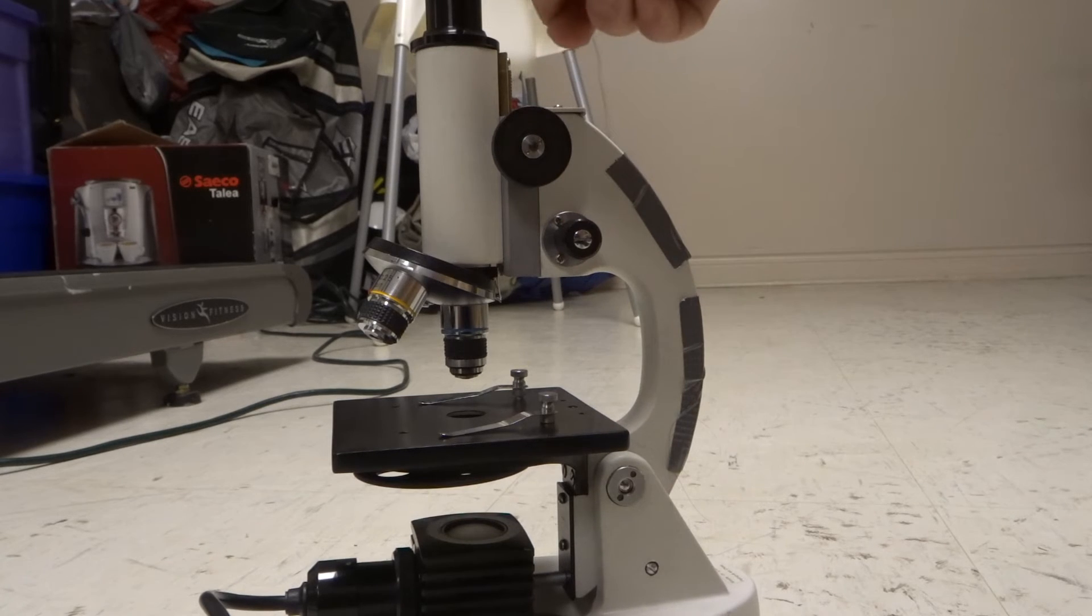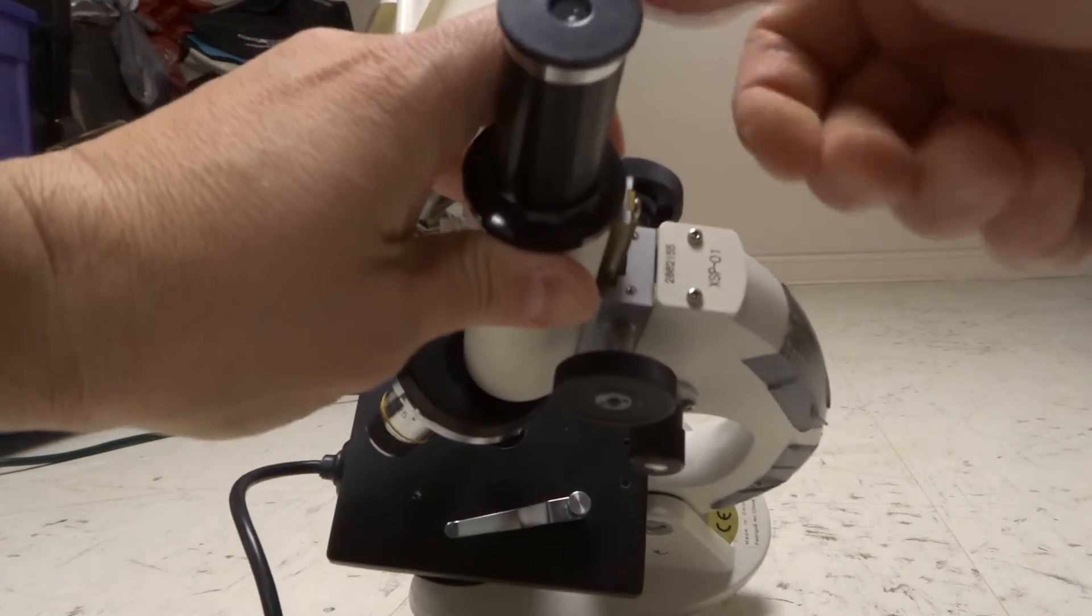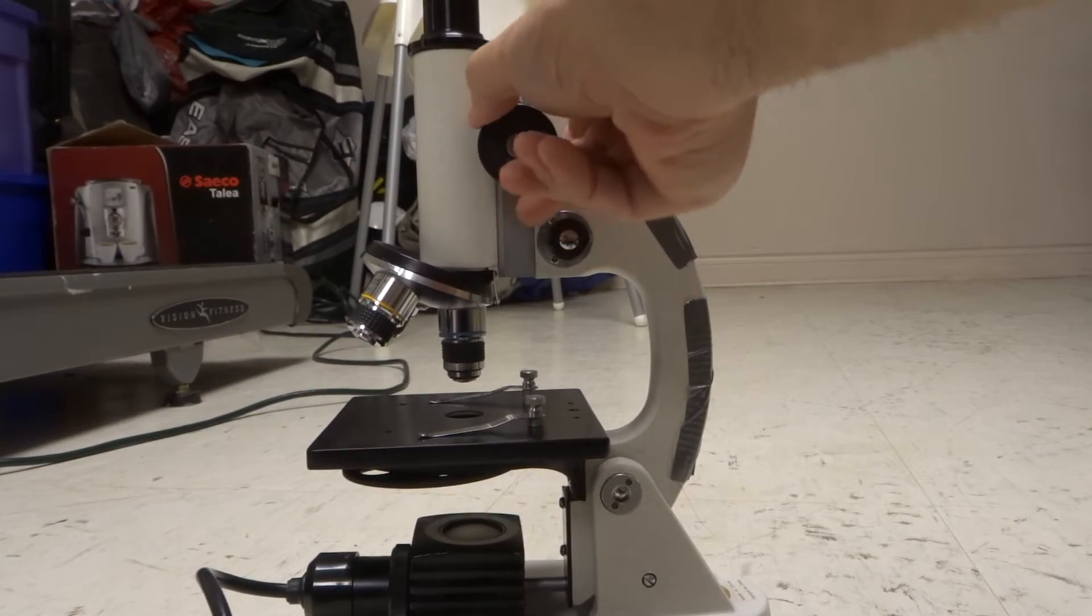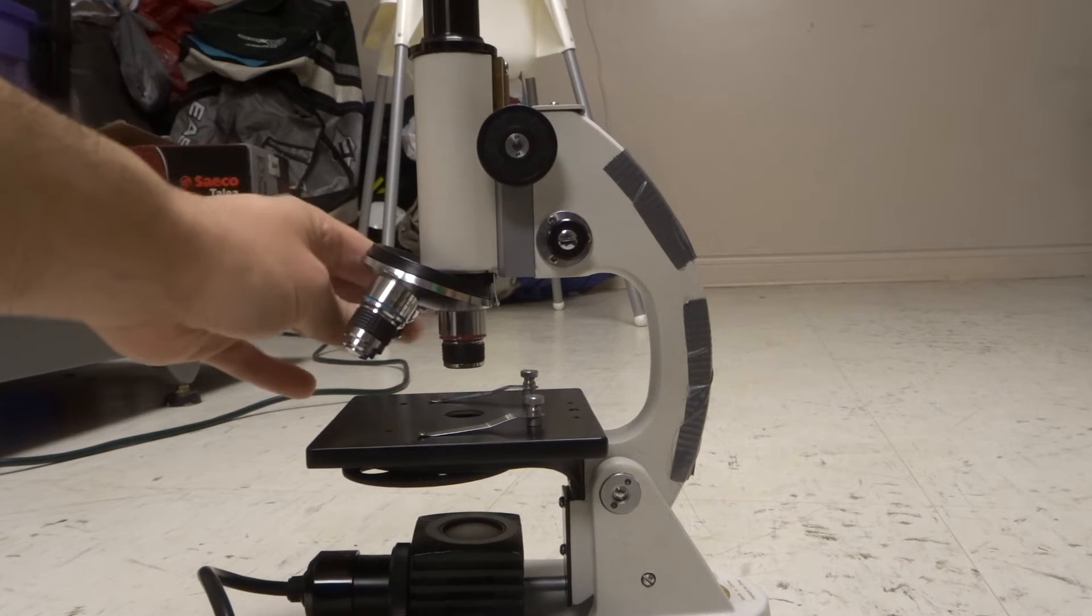So what you want to do is first and foremost, look through the optical lens, the ocular lens up here. And you want to adjust the coarse adjustment knob. And obviously you want to choose your objective lens.